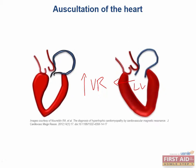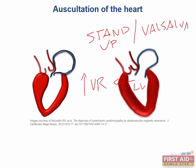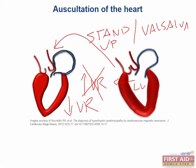If we do the opposite — stand up super fast or perform a Valsalva maneuver — instead of increasing venous return, we're going to decrease venous return and decrease the left ventricular preload. We're back to the first situation where the obstruction returns. This is because less blood in the chamber brings the hypertrophied septum back to the obstructive position.